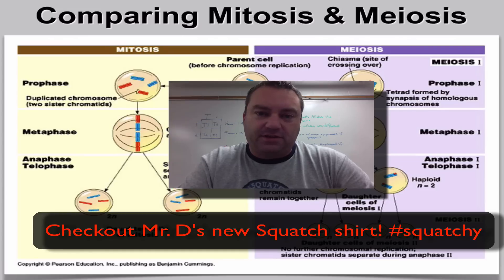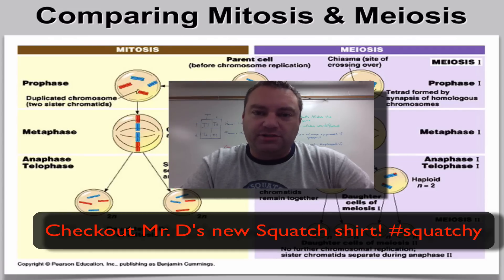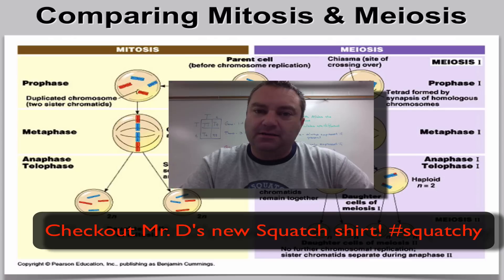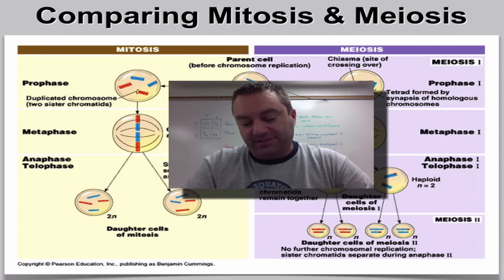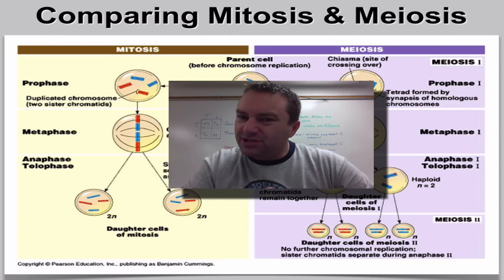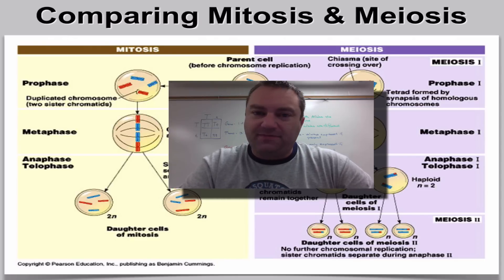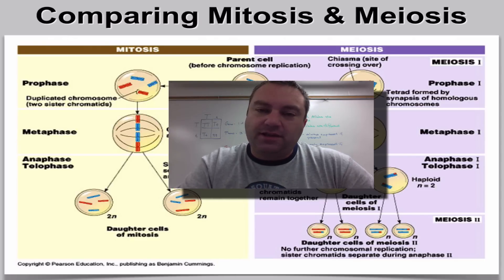In part five of this series, we're going to look at the difference between mitosis and meiosis. It's very easy to get these two confused because they both sound the same and they both essentially are doing a lot of the same things, because they are both forms of cell division.